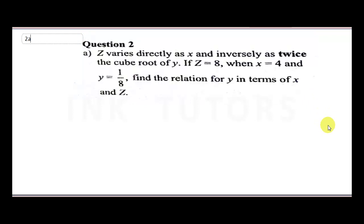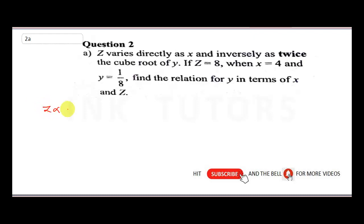The question says: if z varies directly as x and inversely as twice the cube root of y; if z equals 8, x equals 4, and y equals 1/8, find the relation for y in terms of x and z. Since z varies directly as x and inversely as twice the cube root of y, we write z = kx / (2 · ∛y).